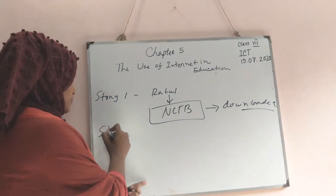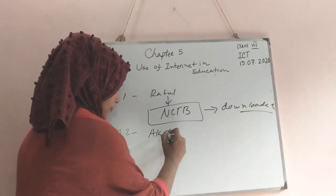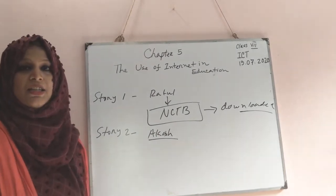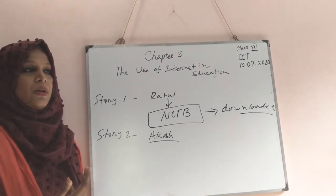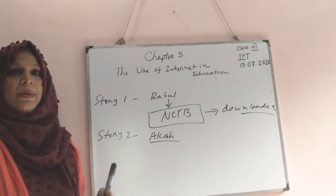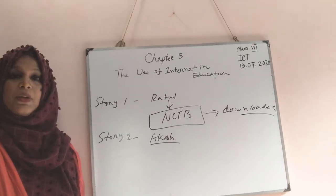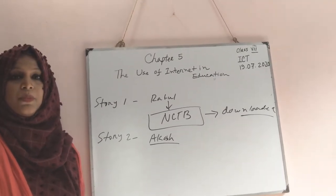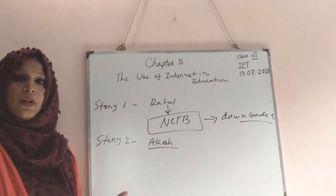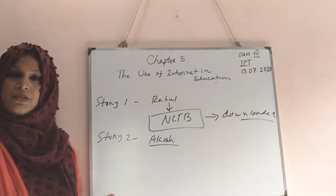Story 2: Akash. From his science book, he learned that Pluto is no longer a planet. He became very surprised because he had known from his boyhood that Pluto is a planet of the solar system. How can it be excluded from the solar system? What is the reason?